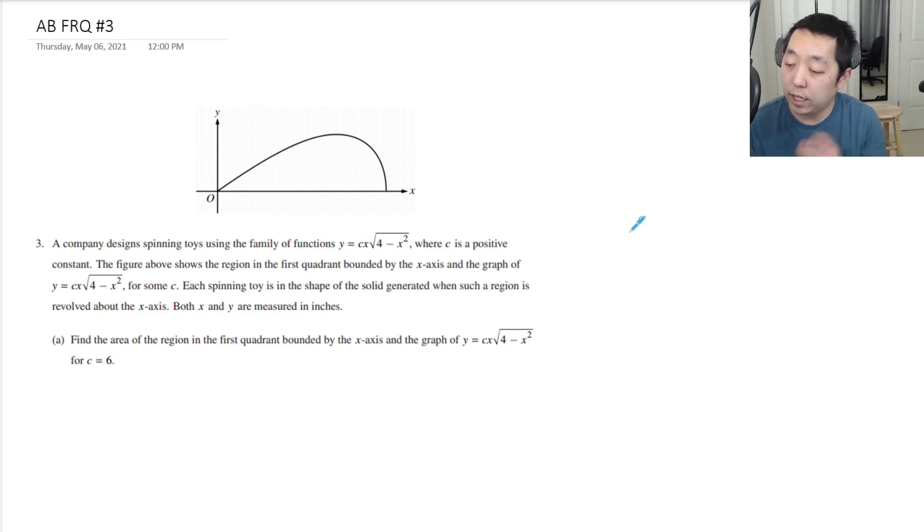Find the area of the region in the first quadrant bounded by the x-axis and the graph of this for c equals 6. So we have y = 6x√(4-x²). First, we need to know what are the bounds here - what are my endpoints? I need to know when this is equal to zero.